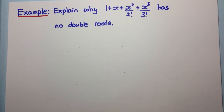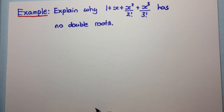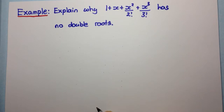In this video we're going to see another example of how to use the multiple root theorem to answer a question. The question says: explain why 1 plus x plus x squared over 2 factorial plus x cubed over 3 factorial has no double roots.